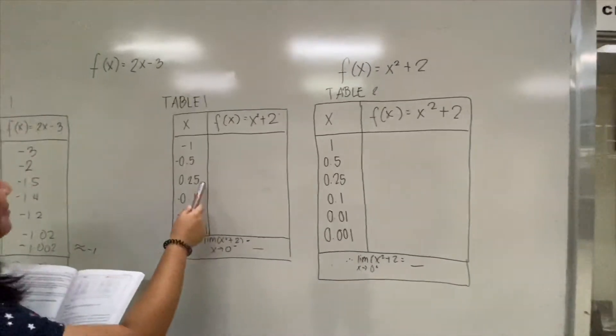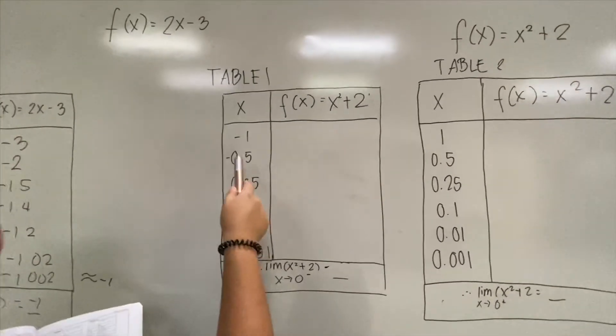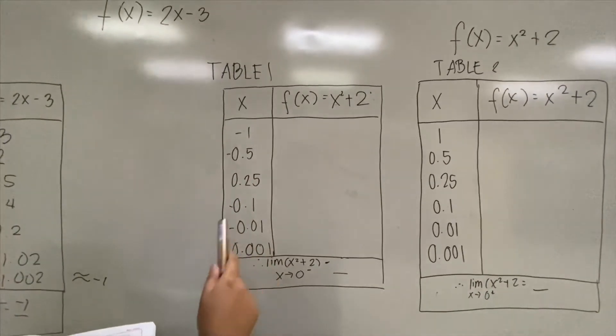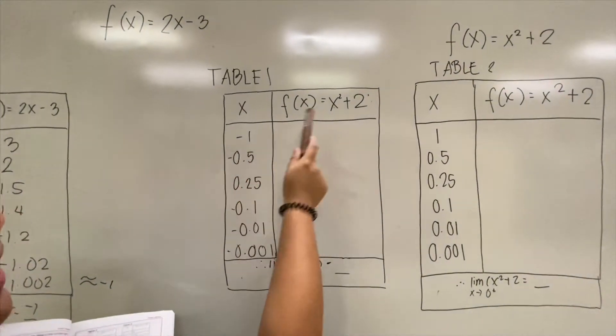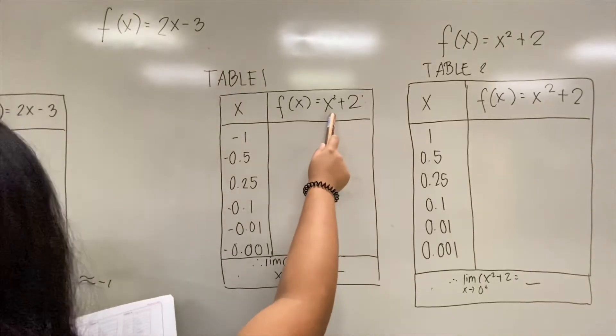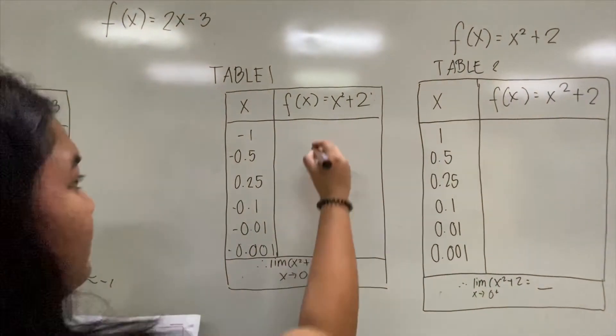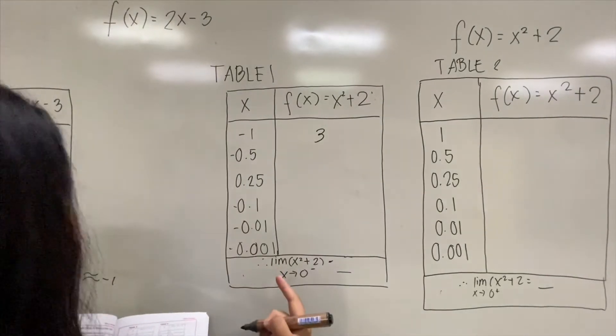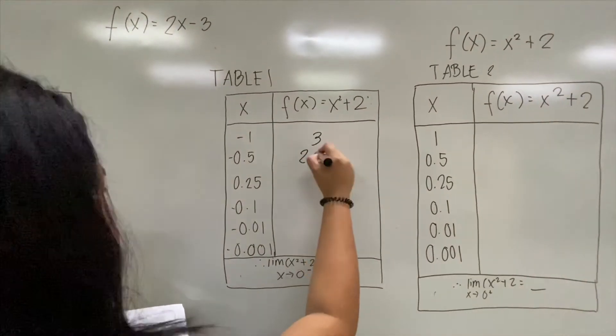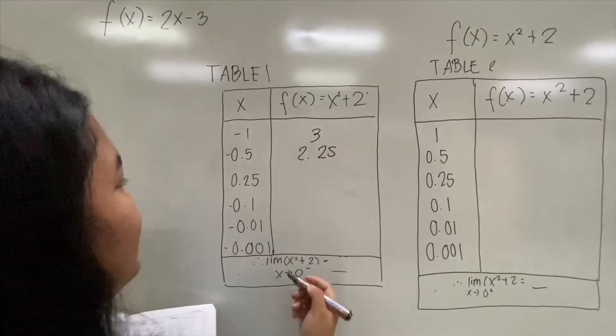In table 1, we have the values of x approach 0 from the left. So, -1 and x² + 2, we get 3. -0.5 and x² + 2, we get 2.25. And so on and so forth.